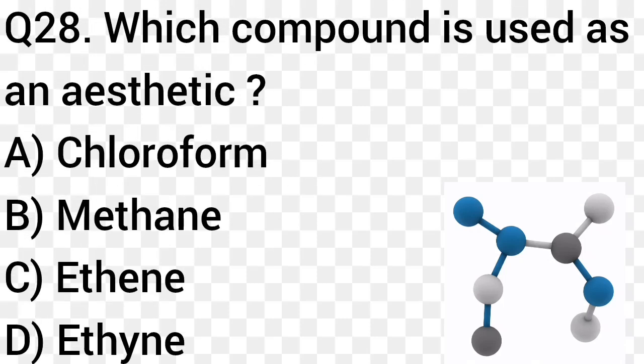Question number 28. Which compound is used as an anesthetic? Option A: Chloroform. Option B: Methane. Option C: Ethane. Option D: Ethane. The right answer is option A, Chloroform.